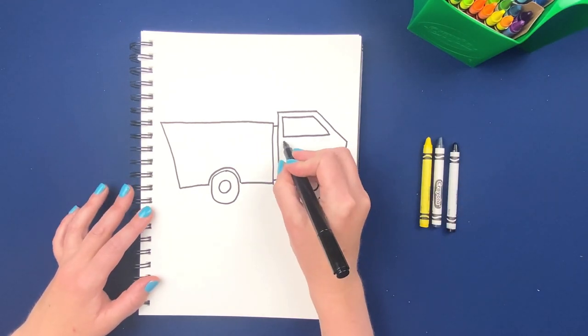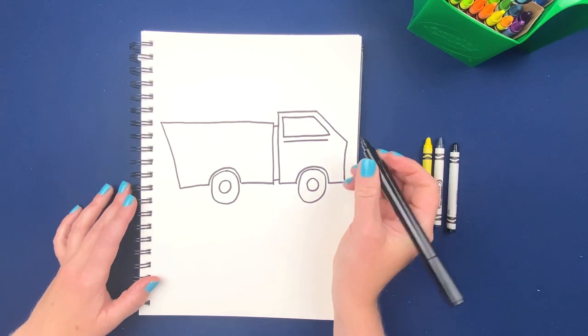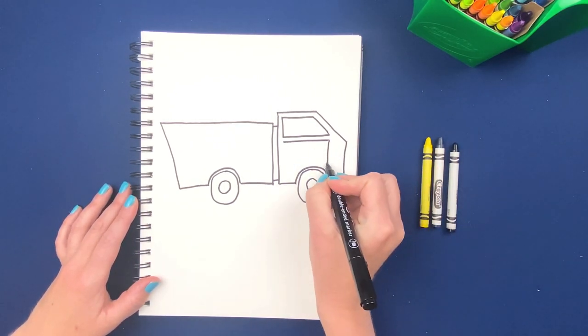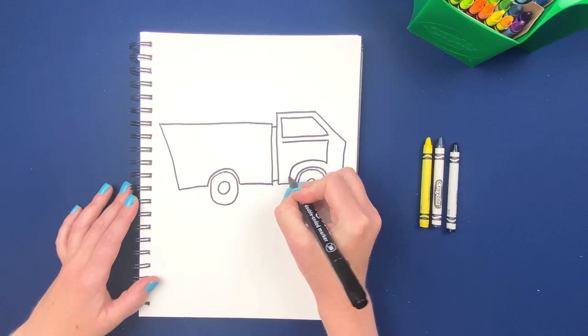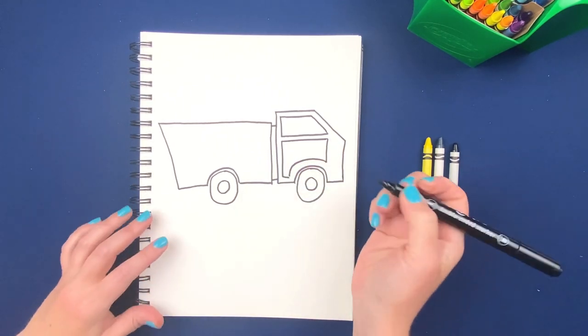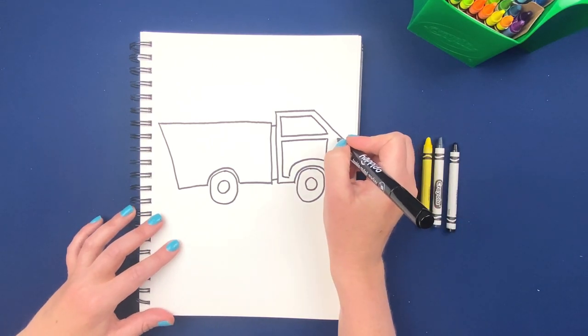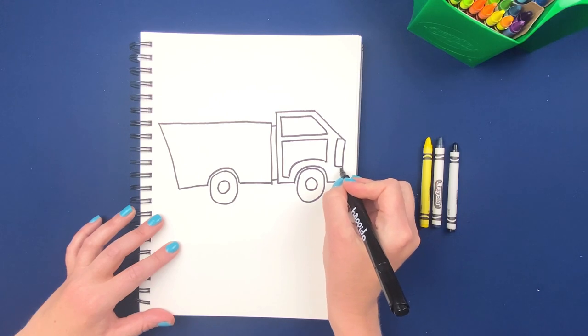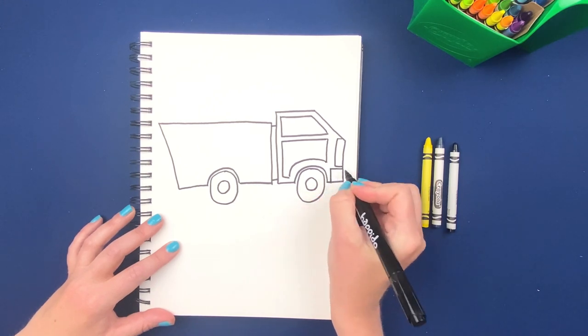And then we're going to go in and put a door right underneath. Straight line. Come on down. And then we need to go over the wheel and meet back down. Put that grill in the front. I'm going to draw the bumper in.